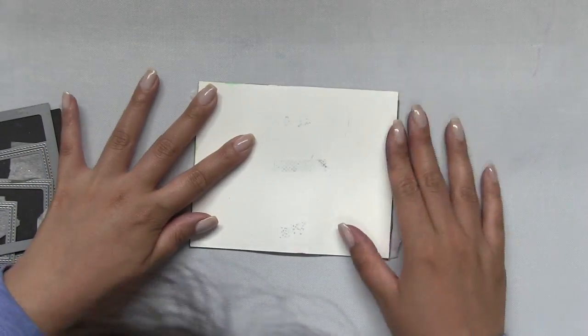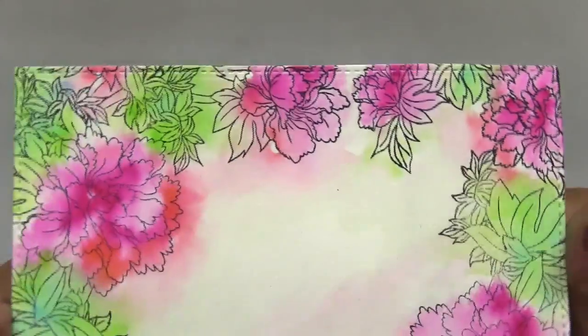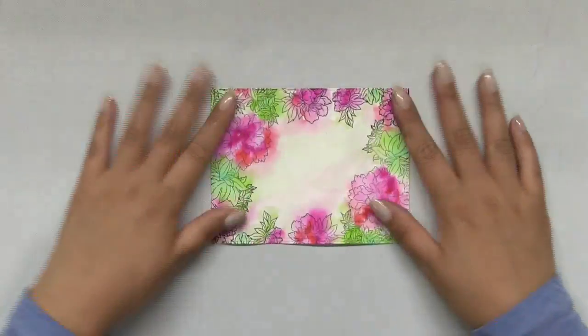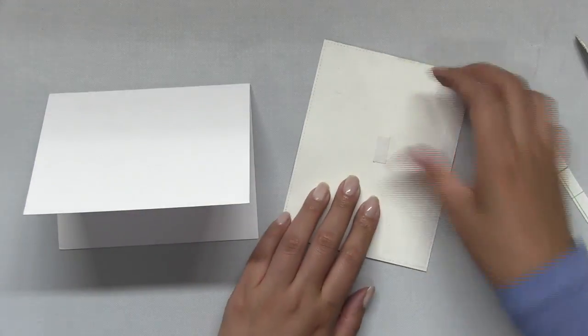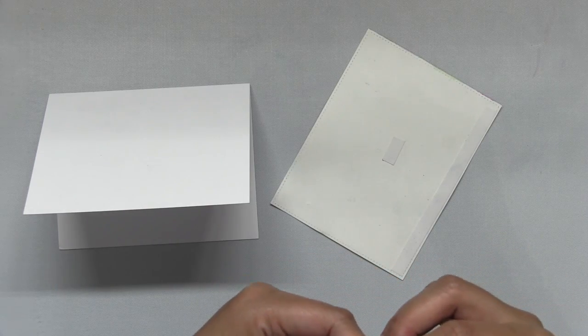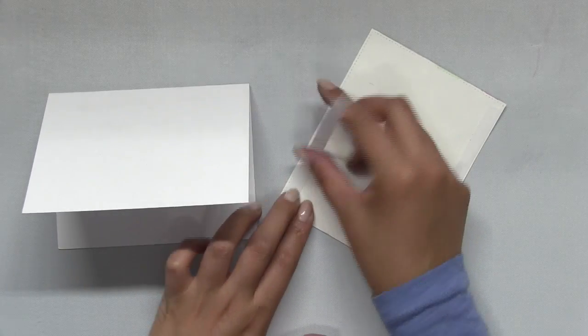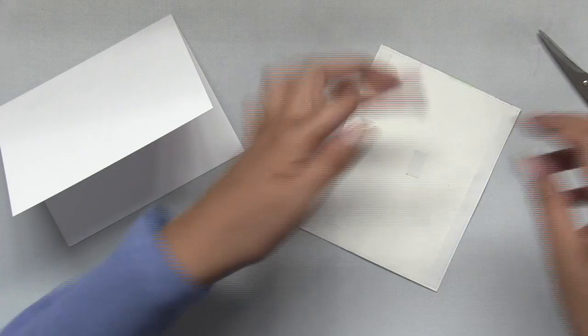Next I expedited the drying process by using my heat gun and I applied heat to the entire panel. Then I took the largest die from our double stitch rectangles large die collection to add stitching to the edges of my panel, at the same time creating an A2 size panel which is four and a quarter by five and a half.